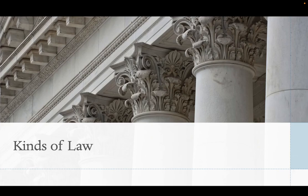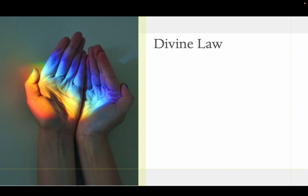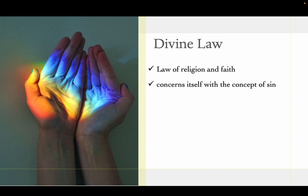What are the different kinds of law? We have the divine law, the natural law, moral law, physical law, and state law. In this subject, what law are we going to follow? But before we answer that, let us first define these different kinds of law. Let us start with the divine law. From the word itself, divine — it is the law of religion and faith. It concerns itself with the concept of sin, and of course, it is promulgated by God.